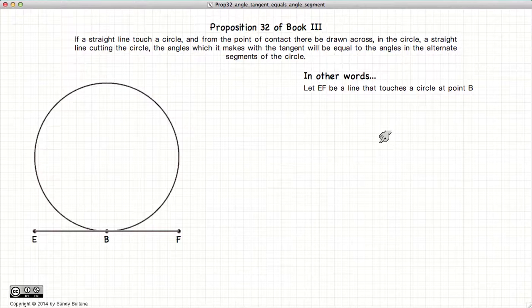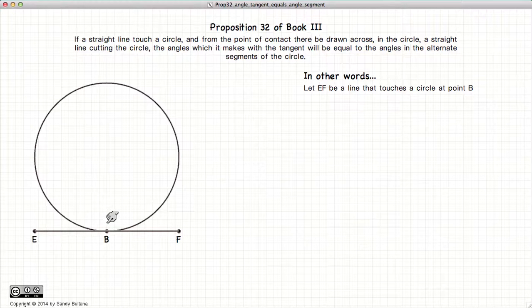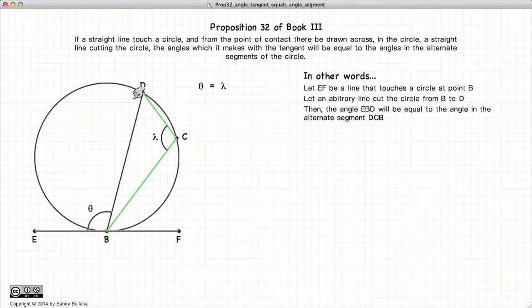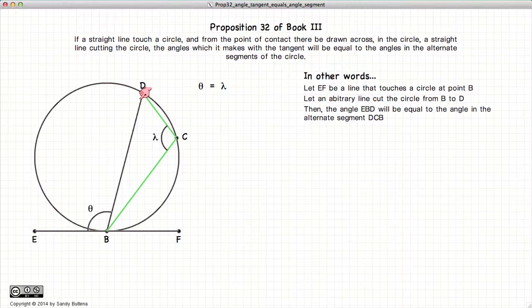This video presentation is going to be on Proposition 32 of Book 3, which states that if we have a line EF touching a circle at point B, and if we draw a line from B such that it intersects the circle at point D, then the angles on one side of these two lines will equal the angle inscribed in the circle segment on the other side. So theta will be equal to the angle inscribed here, which is lambda. So we have theta is equal to lambda.